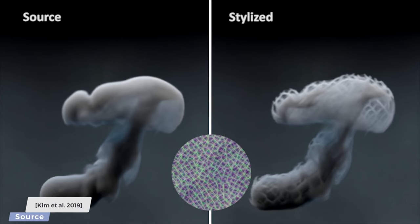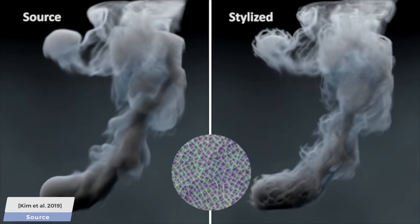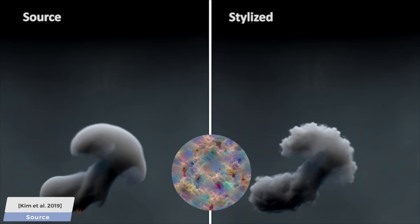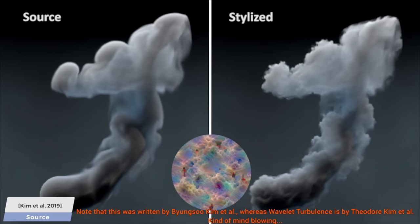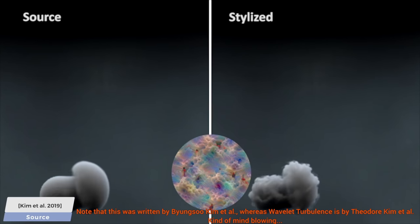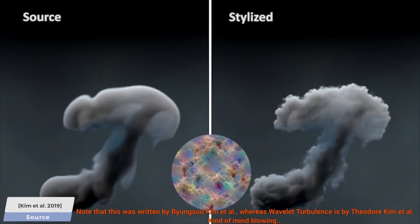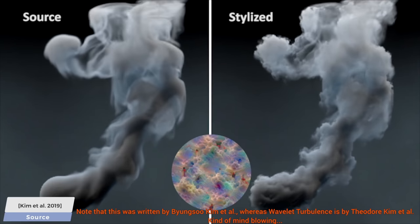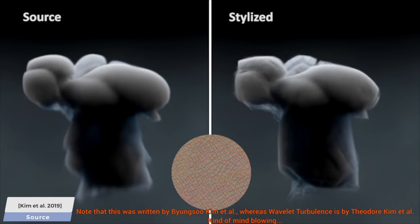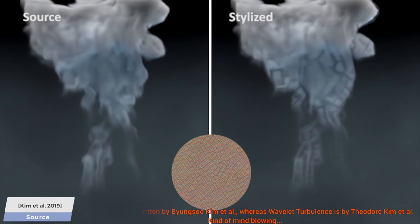This previous work blew me away as it could perform style transfer for smoke simulations. I almost fell out of the chair when I first saw these results. It could do fire textures, starry night, you name it. It seems that it is able to do anything we can think of.